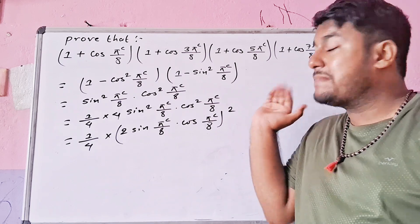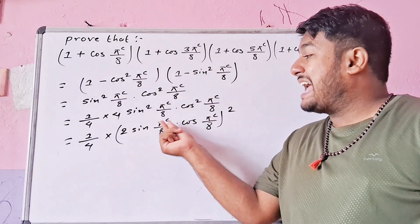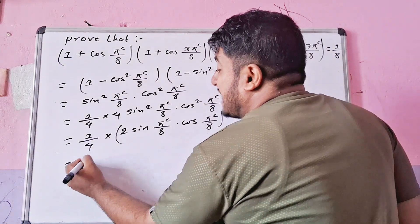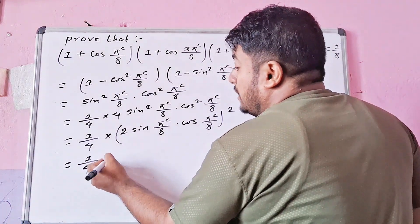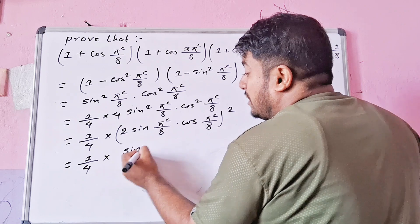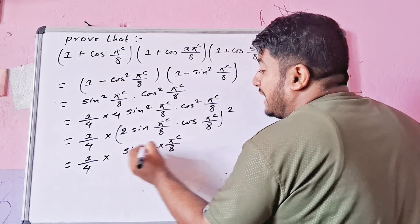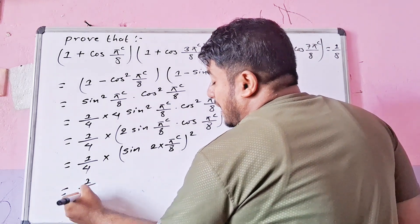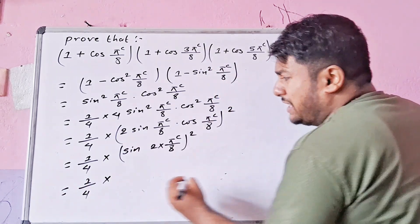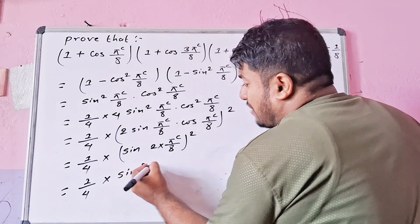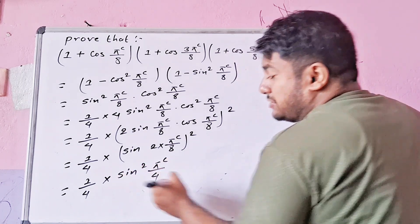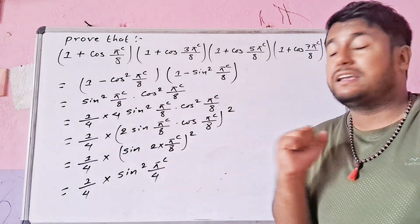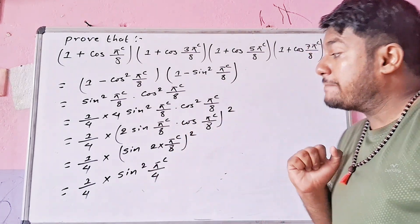Using the double angle formula, 2 sin(a) cos(a) = sin(2a). So 2 sin(π/8) cos(π/8) = sin(2 × π/8) = sin(π/4). The expression becomes 1/4 into sin²(π/4).